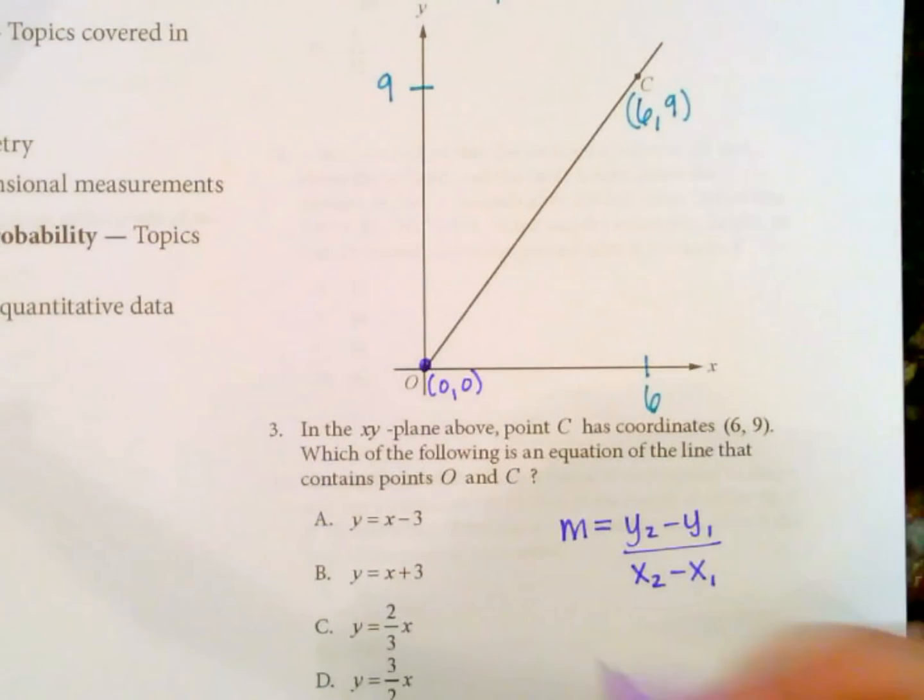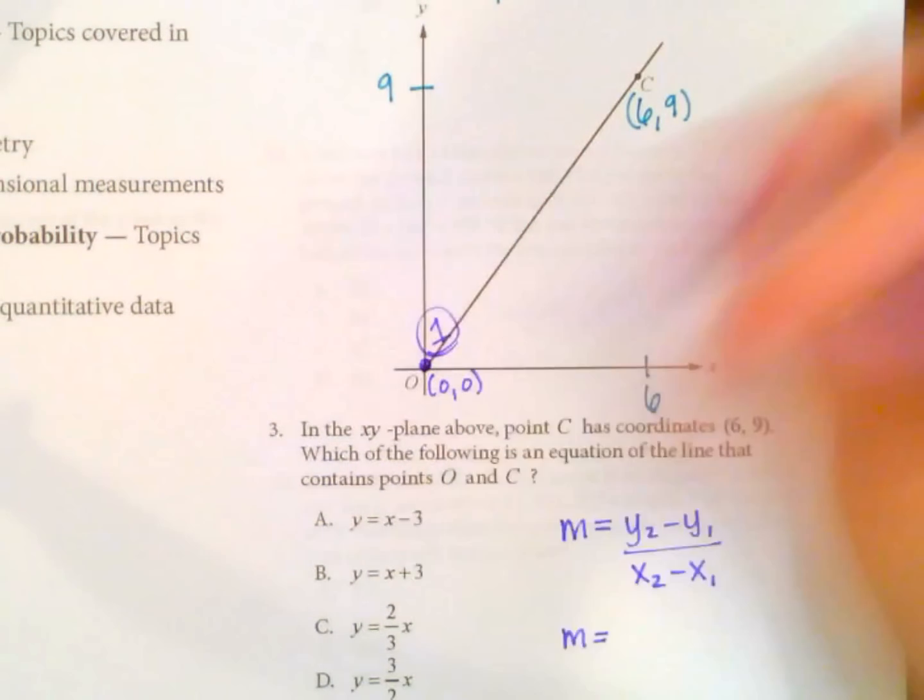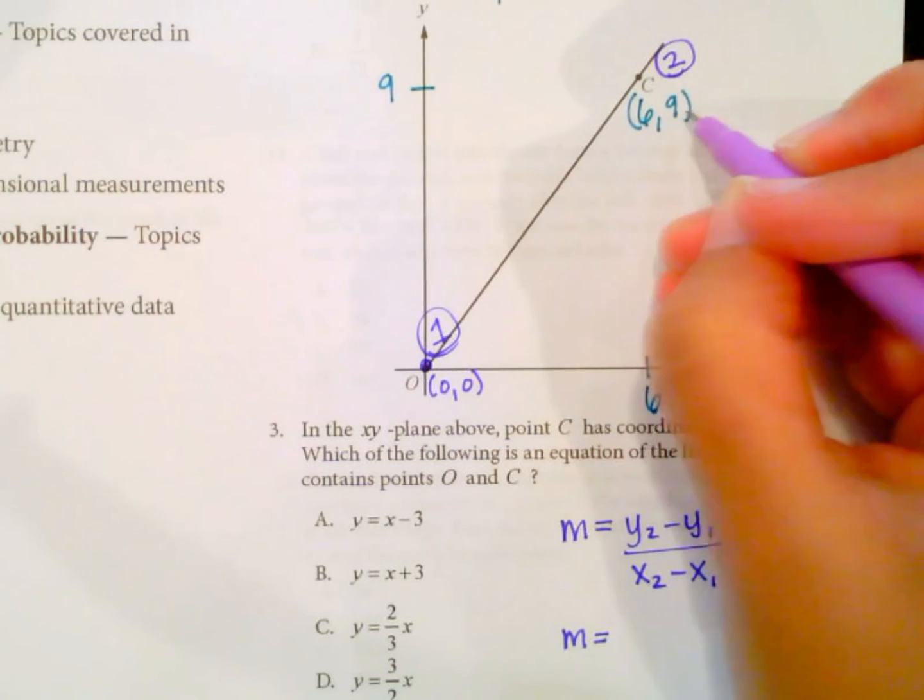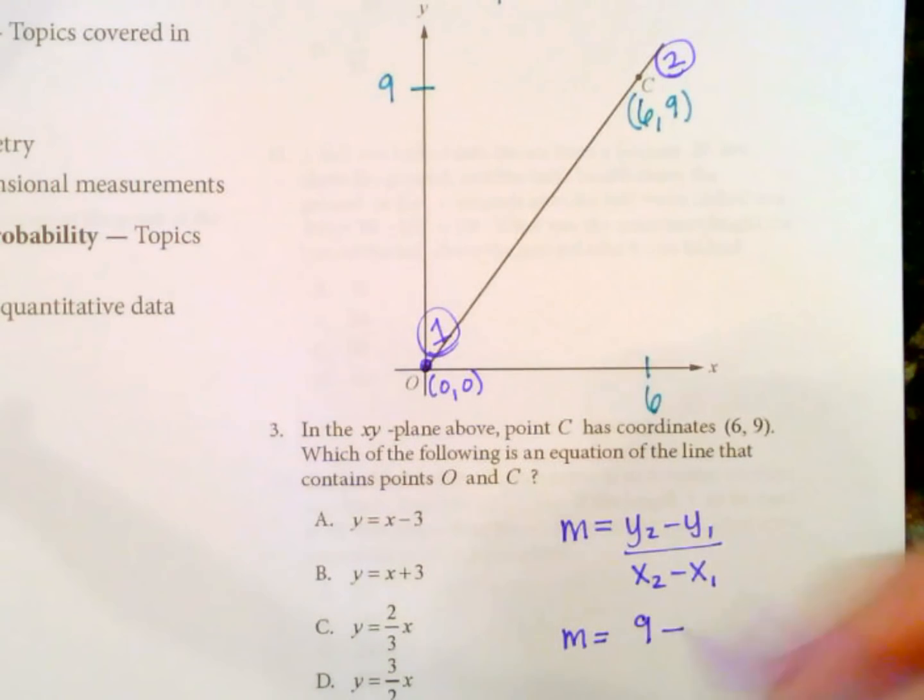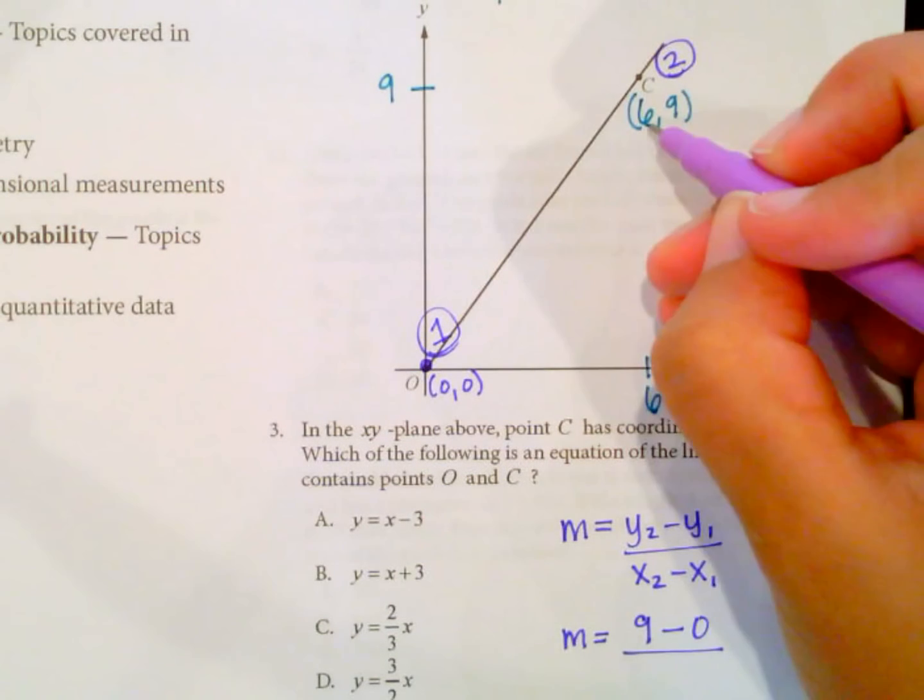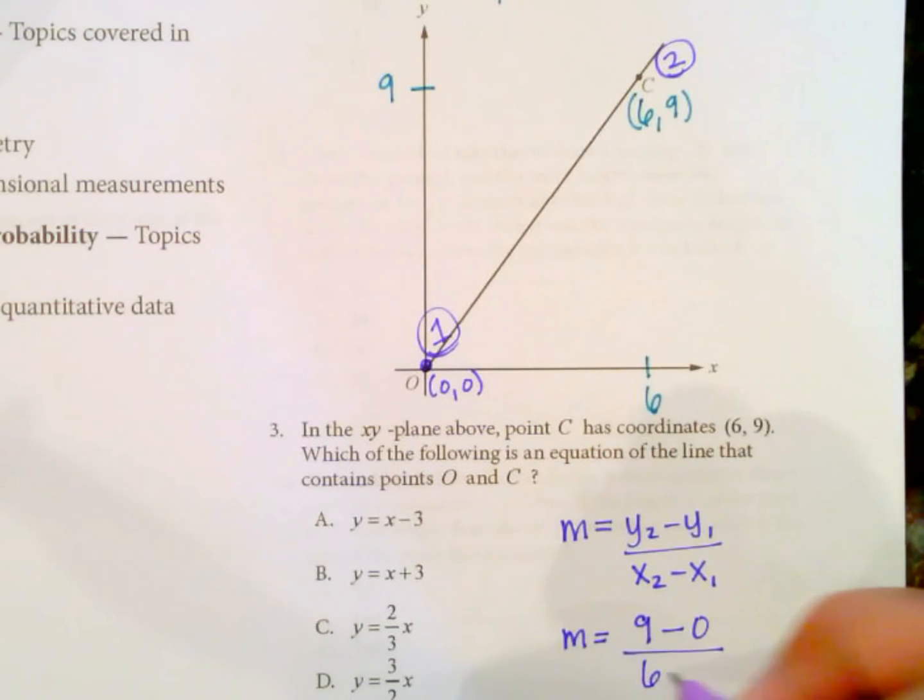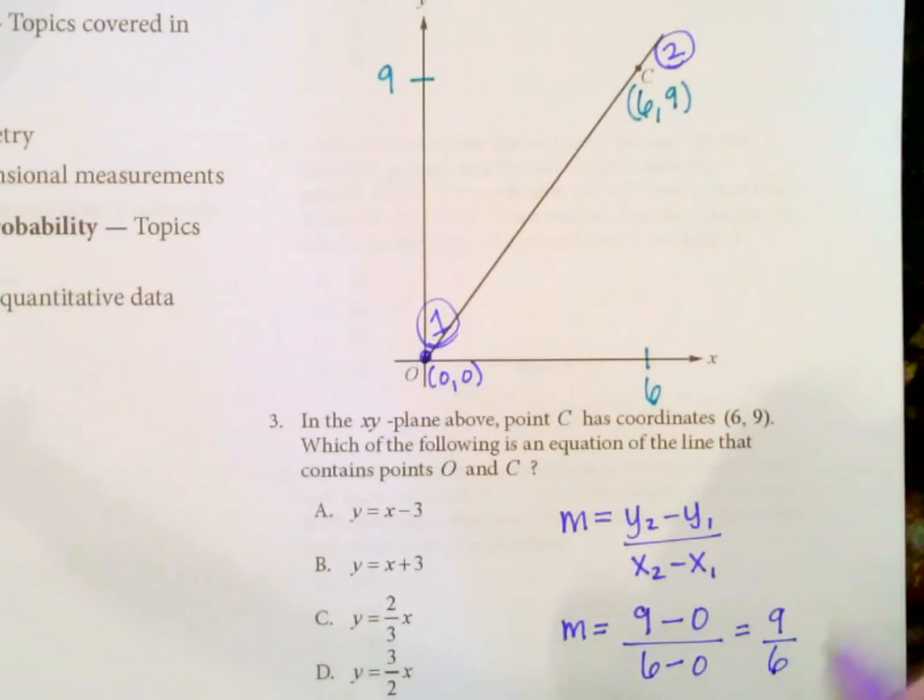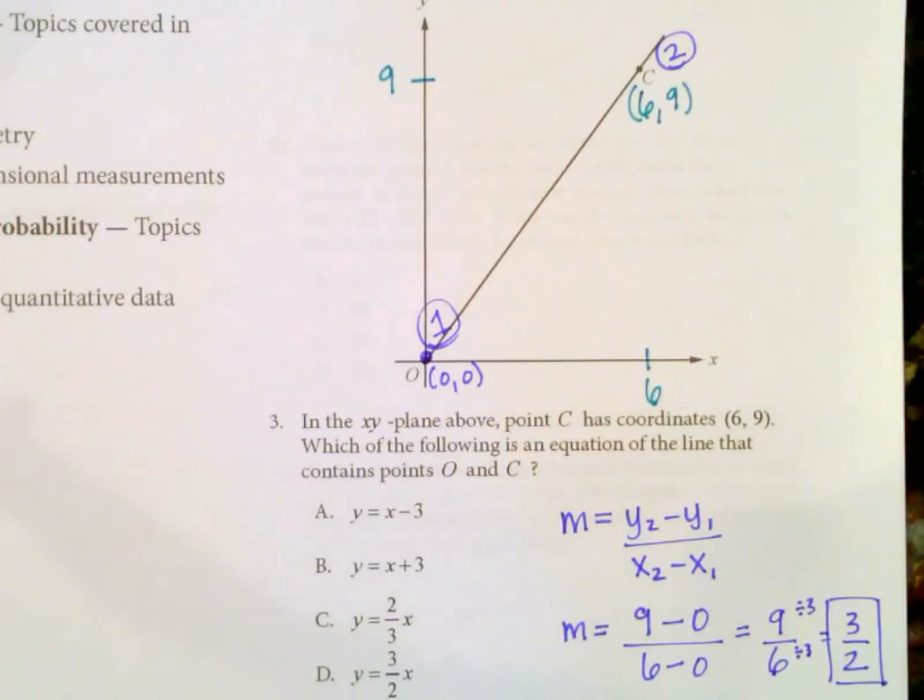First using the formula, m equals. So we'll call this point 1 and this point 2. So y2 is 9, y1 is 0 over x2 is 6, x1 is 0. So this equals 9 over 6, which if we divide by 3 and reduce this, we get 3 over 2. So there's the slope we're looking for.